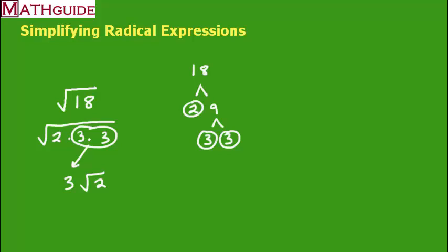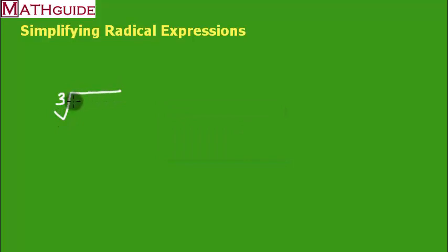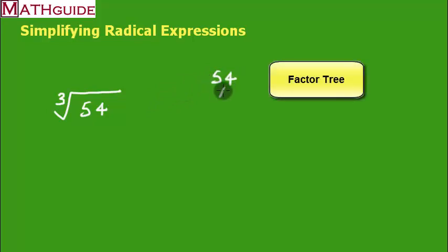Let's take a look at another example. Let's take a look at problem 1B. Let's see what happens when our index is different. So now this is called the cube root of 54.